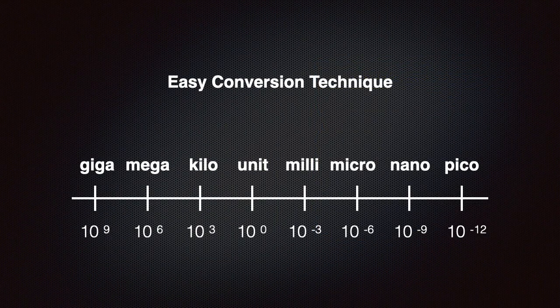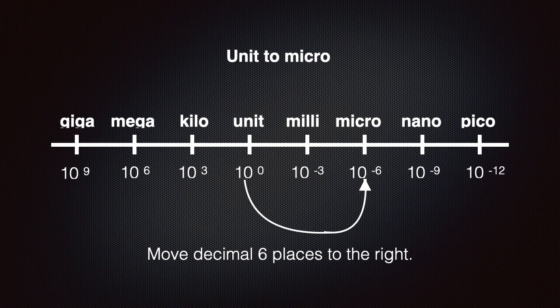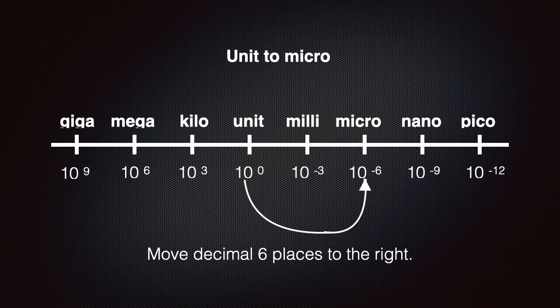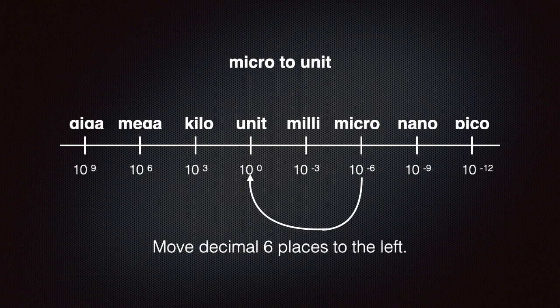Here's a conversion chart that may make it easier for you. While you can't take it with you for your exam, I recommend that you memorize it and draw it on a piece of scrap paper when you take the exam. To move the decimal six places to the right converts from a base unit to micro units. Moving the decimal six places to the left converts from micro units back to base units.